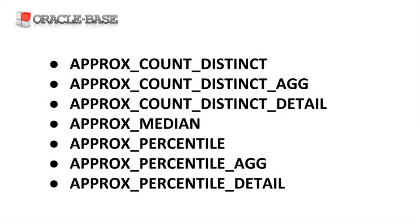Oracle 12.2 introduced a number of new approximate query functions. We can use these directly in a query, but thanks to another new feature of 12.2 we don't have to. Oracle 12.2 allows us to control the automatic conversion of exact query processing to approximate query processing, so we no longer have to alter our code to take advantage of approximate query processing.